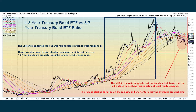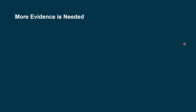Then we got to the beginning of 2023 and things started to shift. The shift in the ratio suggests that the bond market thinks the Fed is close to finishing raising rates — they could be wrong, but we're seeing this anticipation in the price charts, or at least that they're getting ready to pause raising interest rates. The ratio is starting to fall below the rainbow, and shorter-term moving averages are also declining, suggesting that shorter-term bonds aren't as favorable right now as going further out to three to seven years.